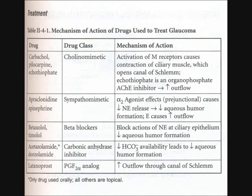Another group of drugs is apraclonidine and epinephrine. These two drugs are sympathomimetic — they mimic the sympathetic nervous response. The mechanism of action involves an alpha-agonist effect, which decreases norepinephrine release. When you decrease norepinephrine release, you decrease aqueous humor formation, which causes an outflow. Epinephrine also causes outflow, so basically you prevent blockade in that region.